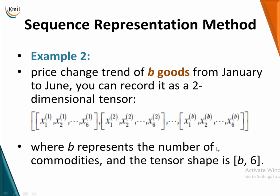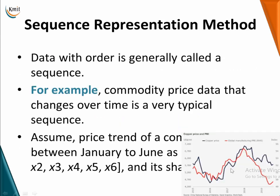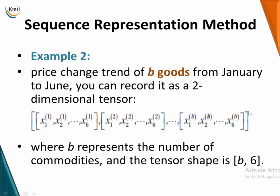Here I am assuming a trend of a commodity between the months of January to June, as X1, X2, and so on up to X6. So you have six months and the price trend has been changing. If I take that there is only one good, you have six prices for six months. But if I consider B number of goods, I can record this as a two-dimensional tensor.